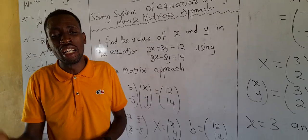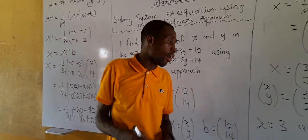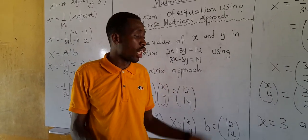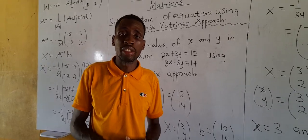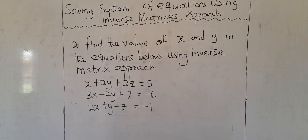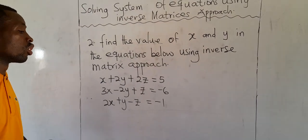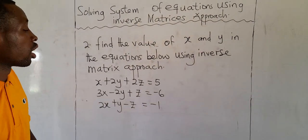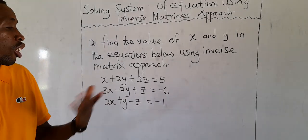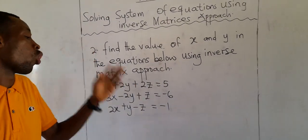Let's solve another question to be more familiar with the concept. This time, we look at simultaneous equations in 3 variables. The first example was in 2 variables, x and y. Now what about x, y, and z?